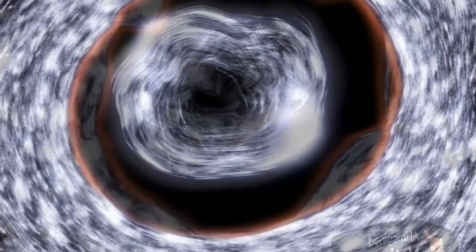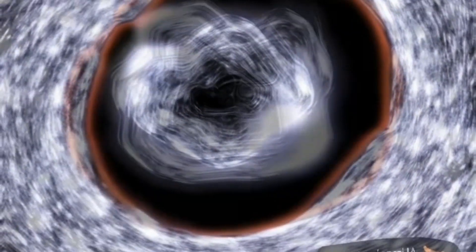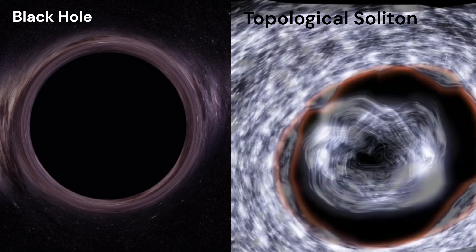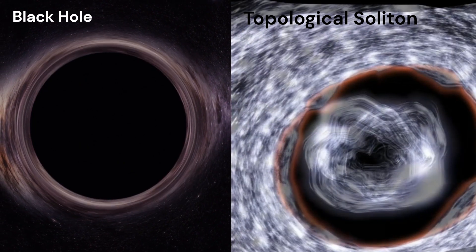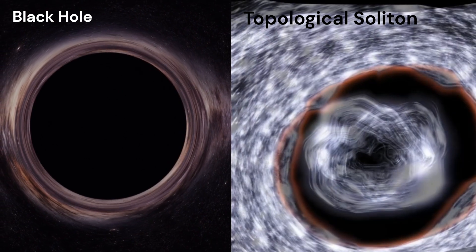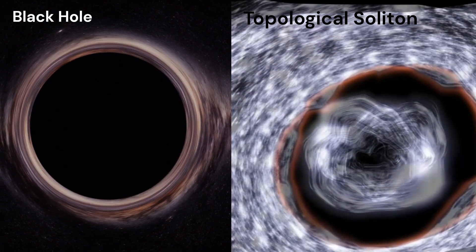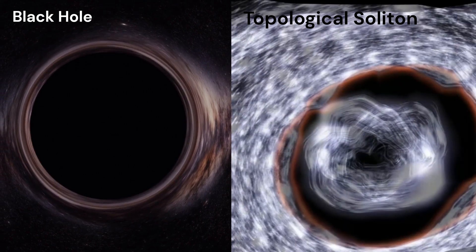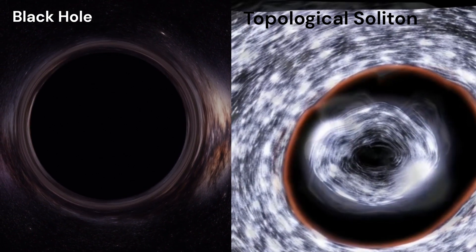This new object is referred to as a topological soliton. The results demonstrate how the topological soliton deforms space in a manner identical to that of a black hole, yet behaves differently, since it scrambles and emits feeble light rays that would not escape the powerful gravitational pull of a real black hole.